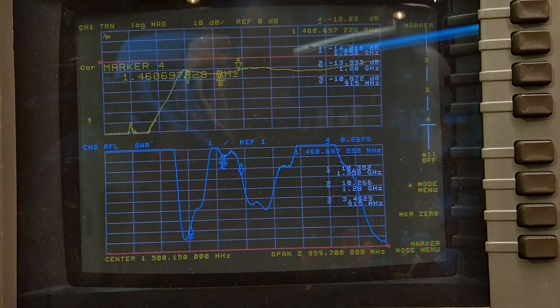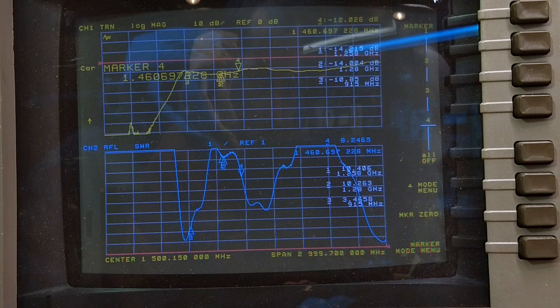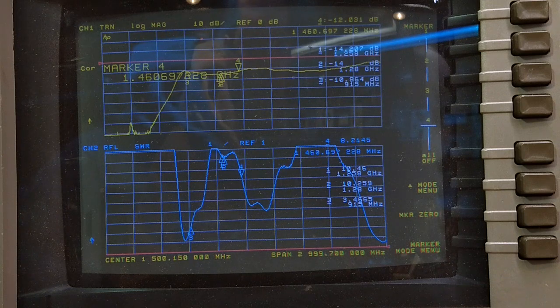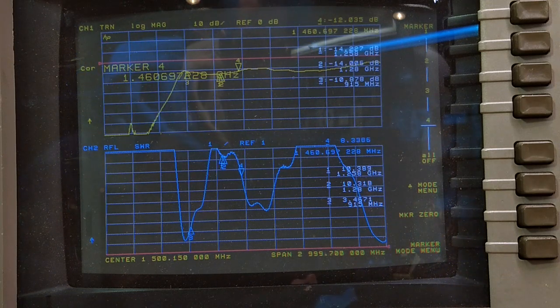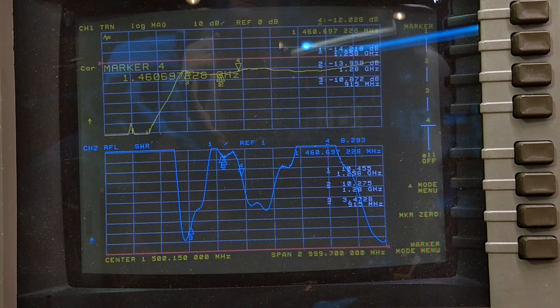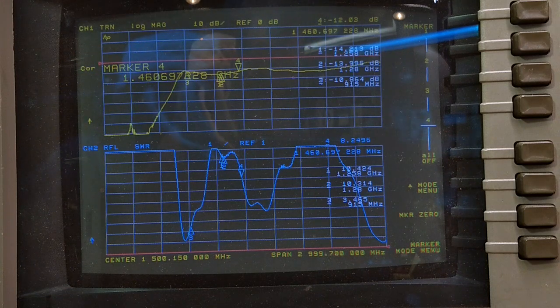Alright, so we've got a couple of traces going on. The top trace in yellow is through, so basically what's going through the device. And right now the device is off. And then the bottom trace is reflected SWR back out into the antenna, so the SWR.